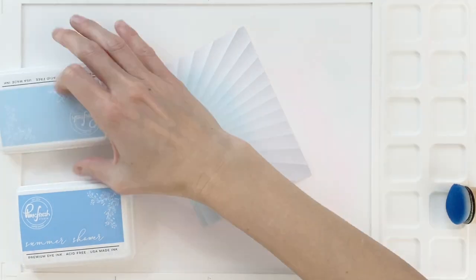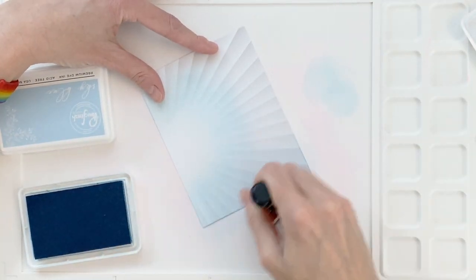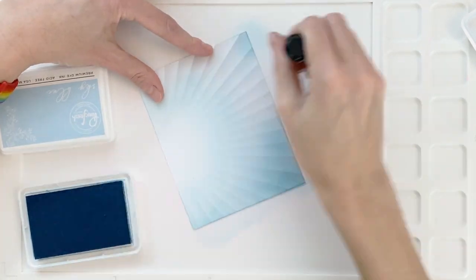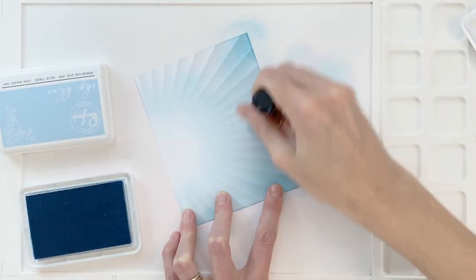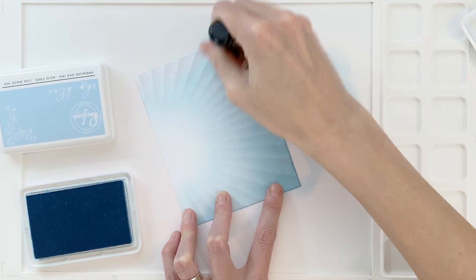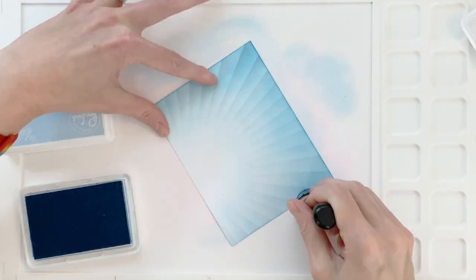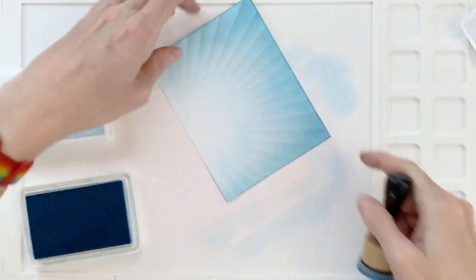I do recommend that you use dye inks. Here I'm using pink fresh inks. I started with sky blue and now I'm on to summer showers. The reason why I recommend dye inks over opaque inks like pigment inks or distress oxides is because the dye inks will keep that print very crisp. The opaque inks have a tendency to kind of cloud it and you lose that beautiful print.